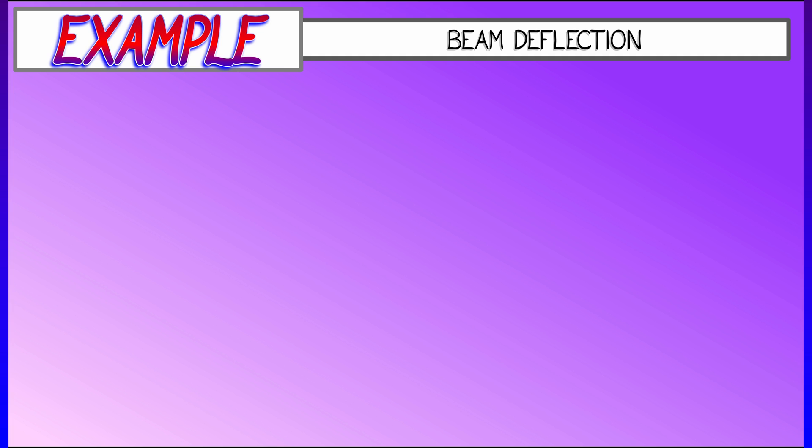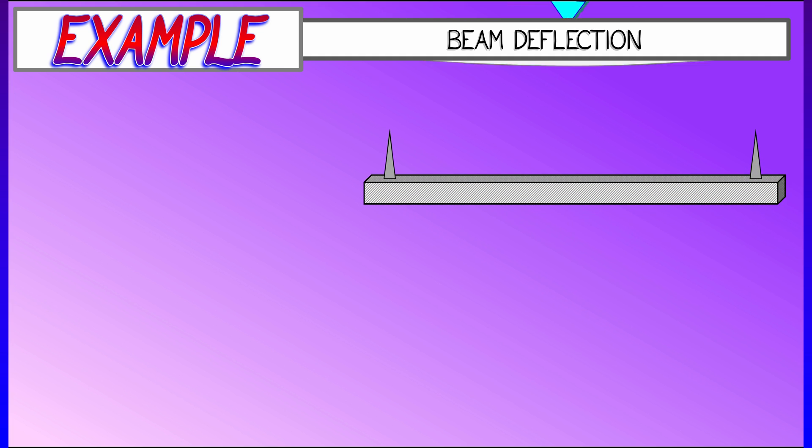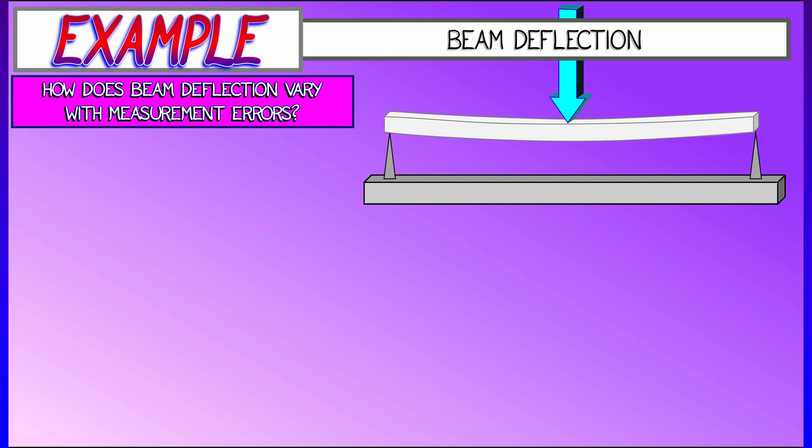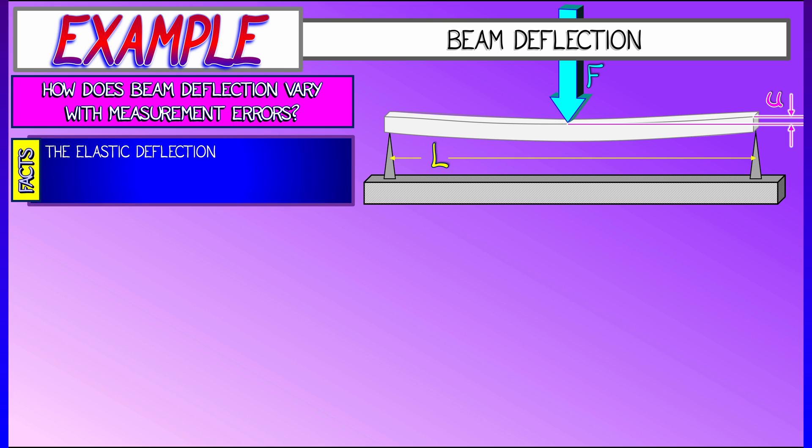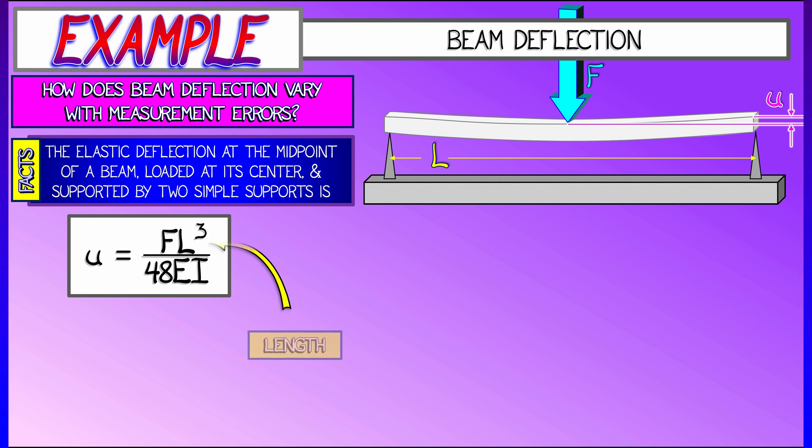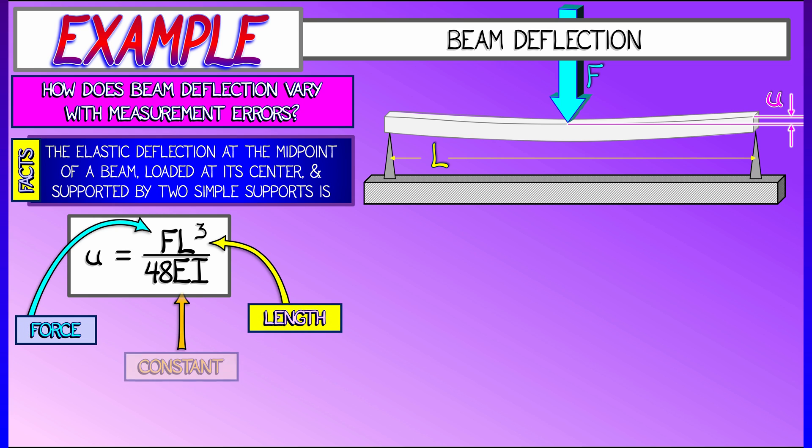Let's take a look at how this works again. I love beams. Let's push on some beams and deflect them. And consider how that beam deflection varies with measurement errors. So here's the setup for the problem. I've got a beam and I push on it in the middle. And I want to measure the elastic deformation or deflection u at the center of the beam. Let's assume it's loaded in the middle and supported on the two ends.